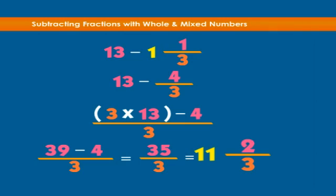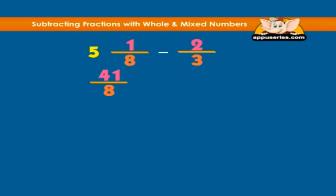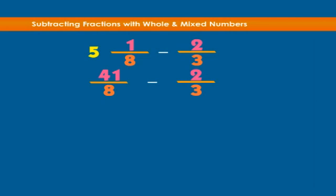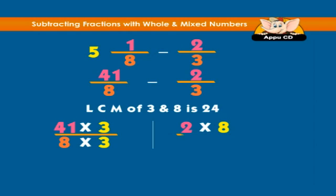Another example: five and one-eighth minus two-thirds equals how much? Converting the first number to an improper fraction, we have five and one-eighth equals forty-one over eight. The problem becomes forty-one over eight minus two over three. The LCM of three and eight is twenty-four.